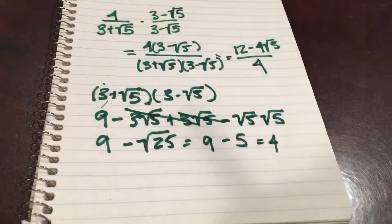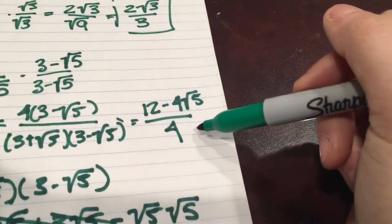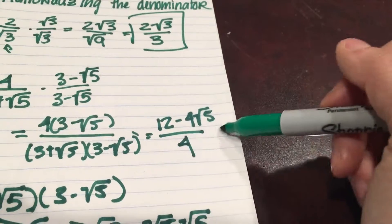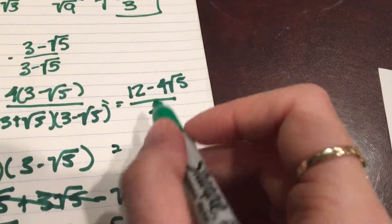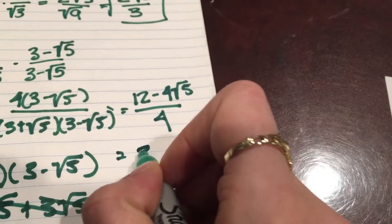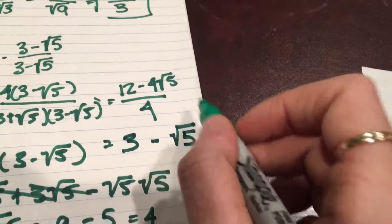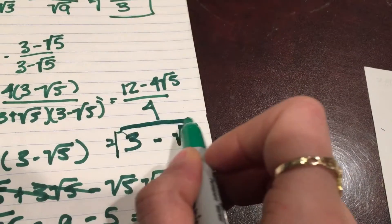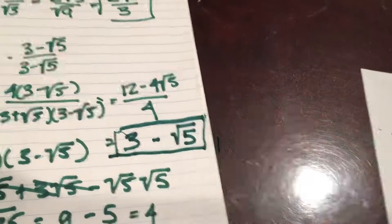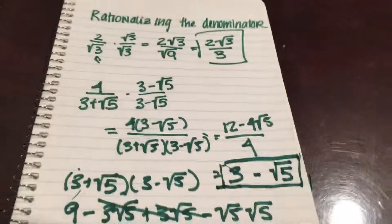So here is our answer: 12 minus 4 square root of 5 all over 4. Only thing is we can reduce everything by 4, so we'll have 3 minus square root of 5. All right, there you go guys.